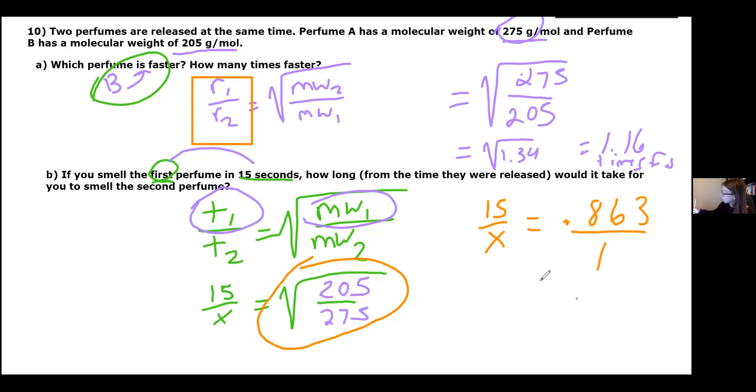Then we're doing 15 divided by that 0.863 number. And we get X to be 17.37. And that would be in seconds, just because our 15 was in seconds. That's it.